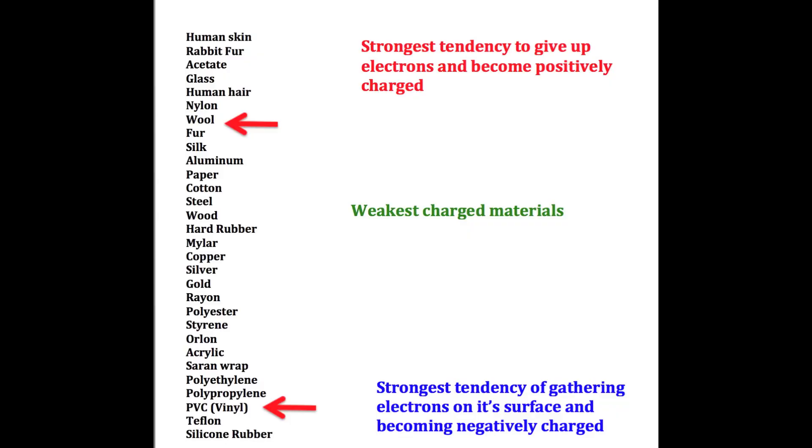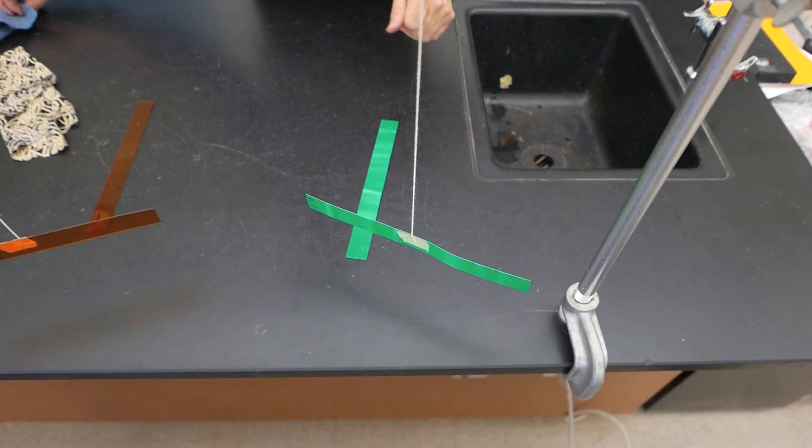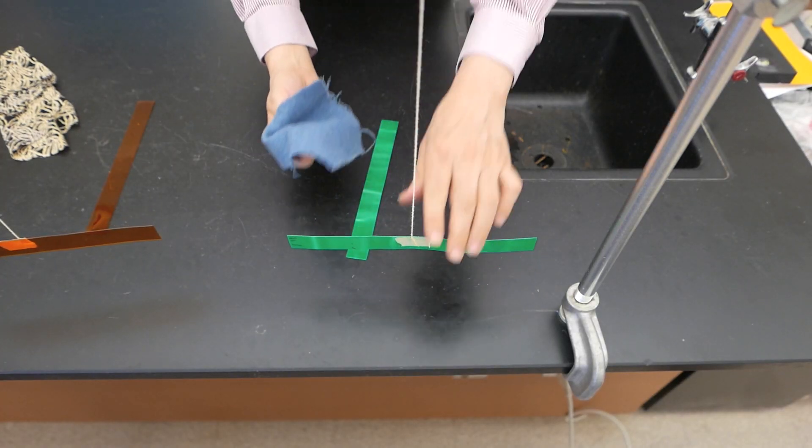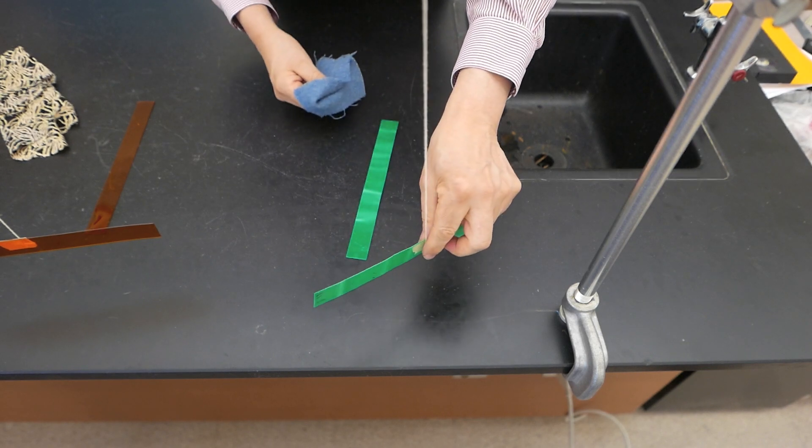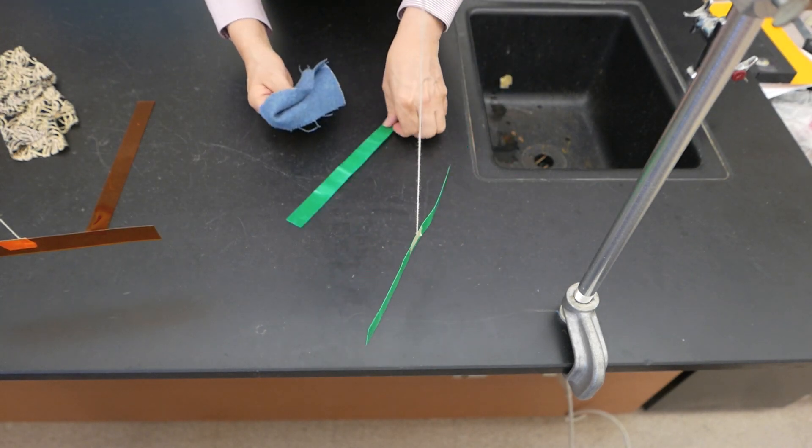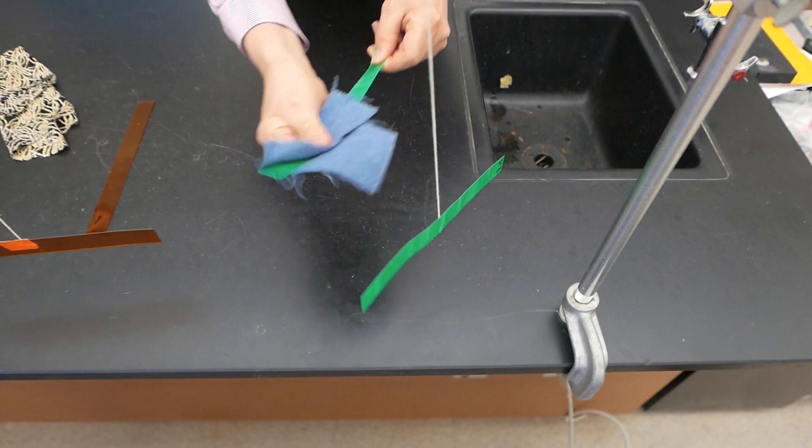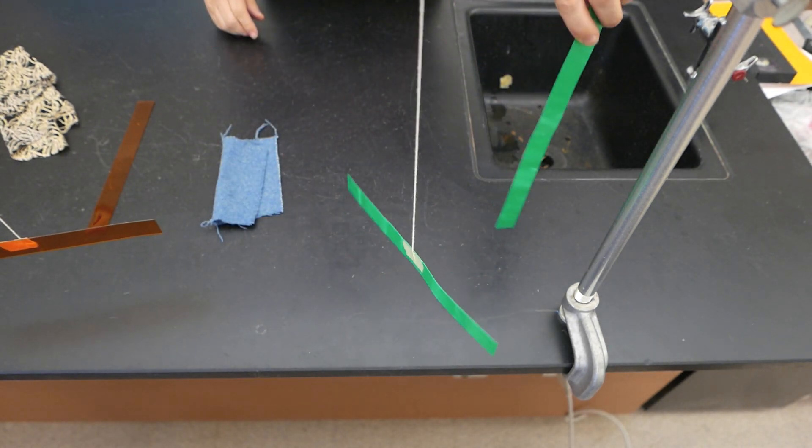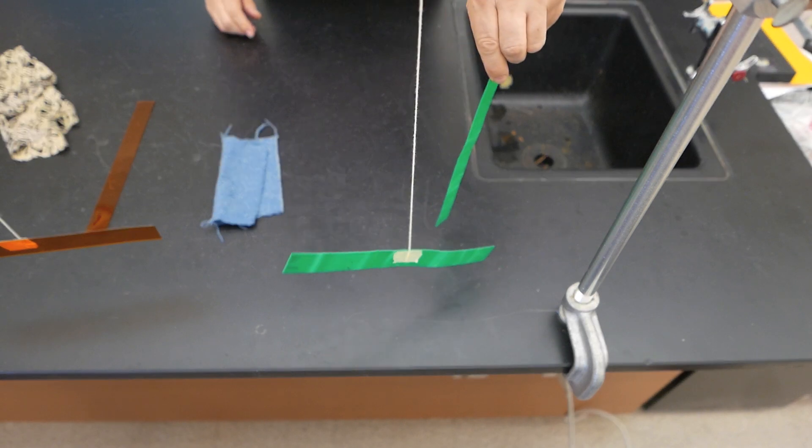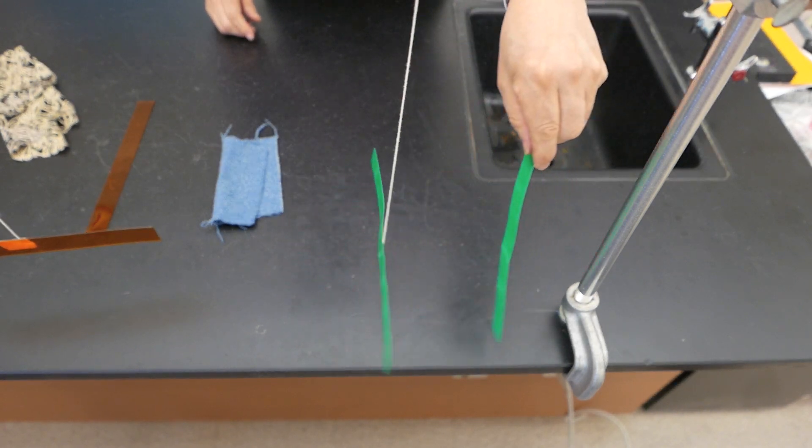Now let's try rubbing that vinyl strip with wool. Now when we do this I do want to rub both the strips. I'll start with the one that's hanging down. Get both ends of it. There we go. And now rub the second strip with the wool. Bring it near. And it pushes it away.